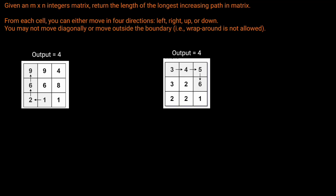Hello and welcome back to the Cracking FAANG YouTube channel. Today we're going to be solving LeetCode problem 329: Longest Increasing Path in a Matrix. Given an m by n integers matrix, return the length of the longest increasing path. From each cell you can either move in four directions: left, right, up, or down. You may not move diagonally or move outside the boundary, and wraparounds are not allowed.